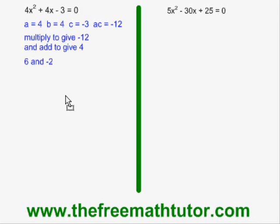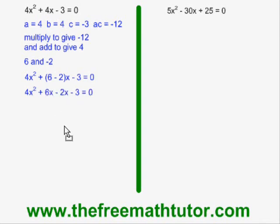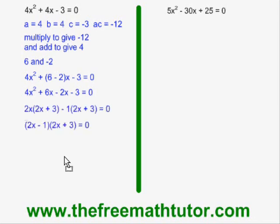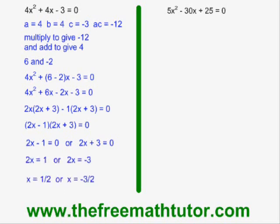So I rewrite my expression including those numbers as the middle term, break up the bracket, do common factor with the first two terms and common factor with the last two terms, and I end up getting these as my factors. Next I do the split, make each binomial equal to 0, and isolate x. My answer is x = 1/2 or x = −3/2. That means that the roots, the zeros, or x-intercepts of this quadratic equation are at 1/2 and −3/2.